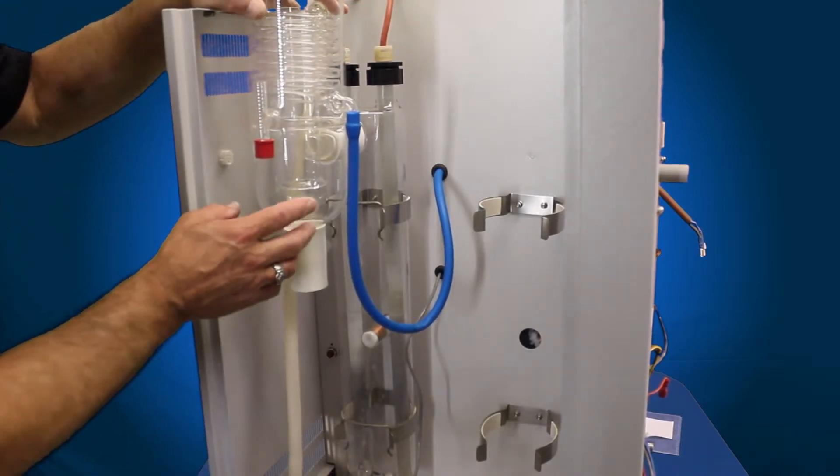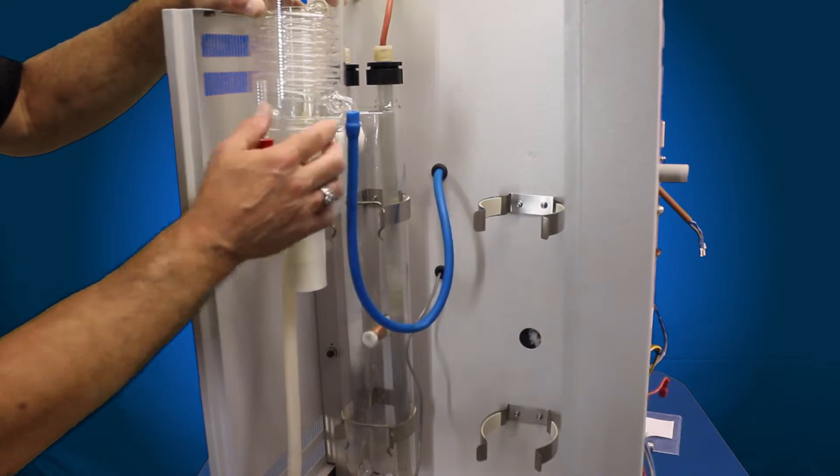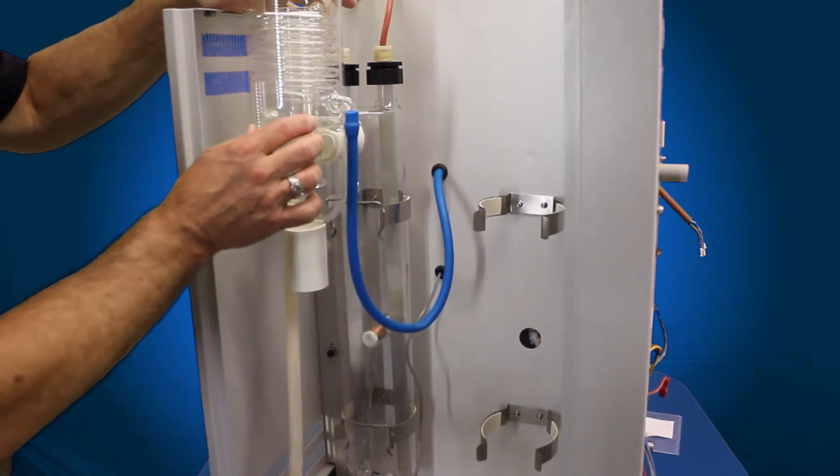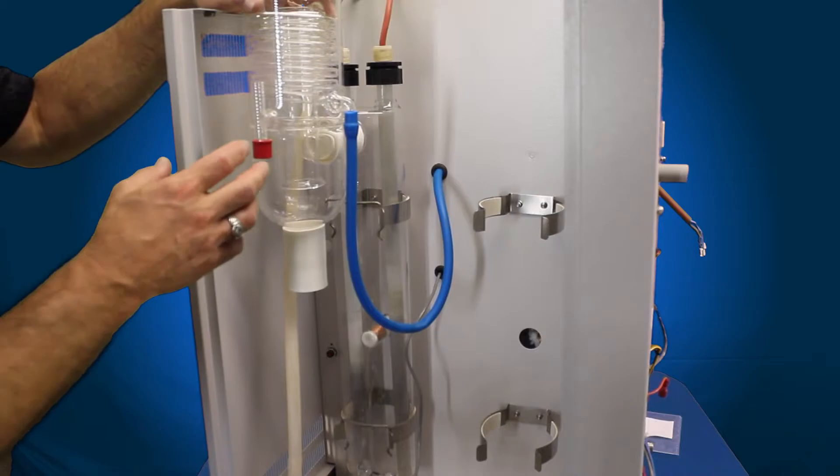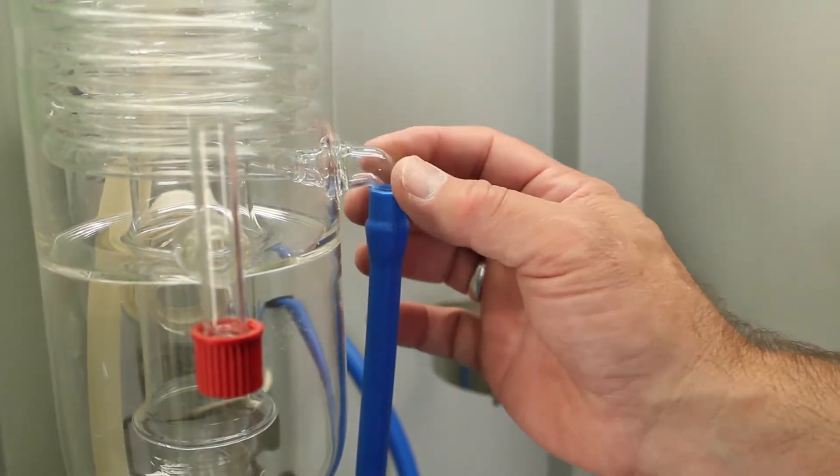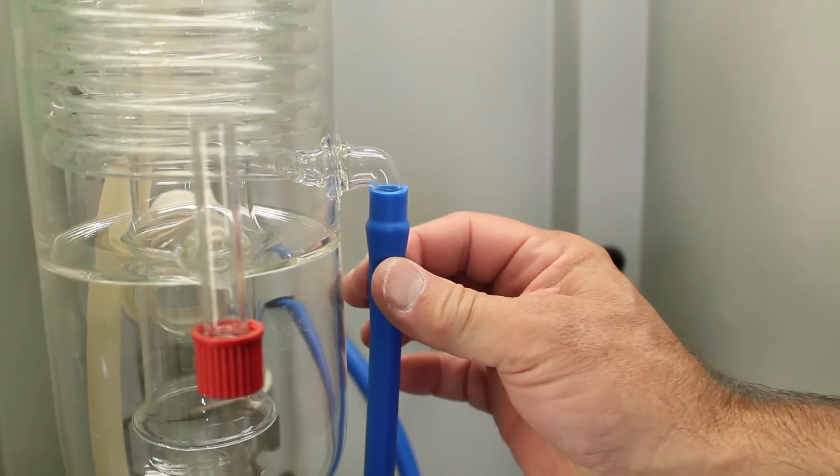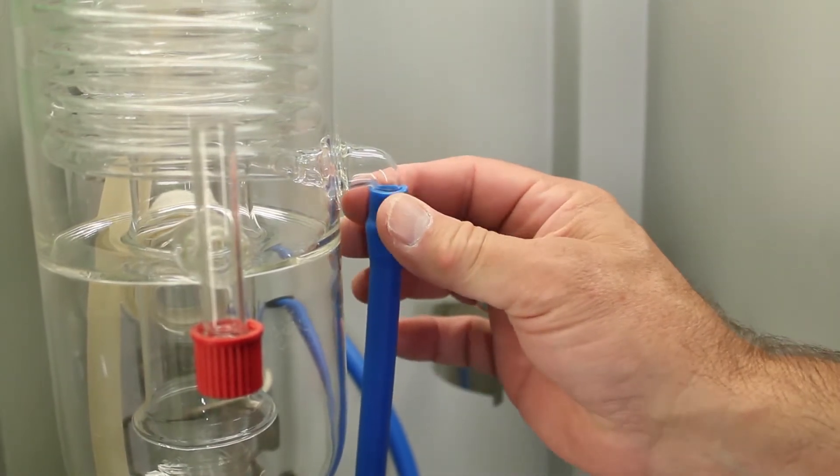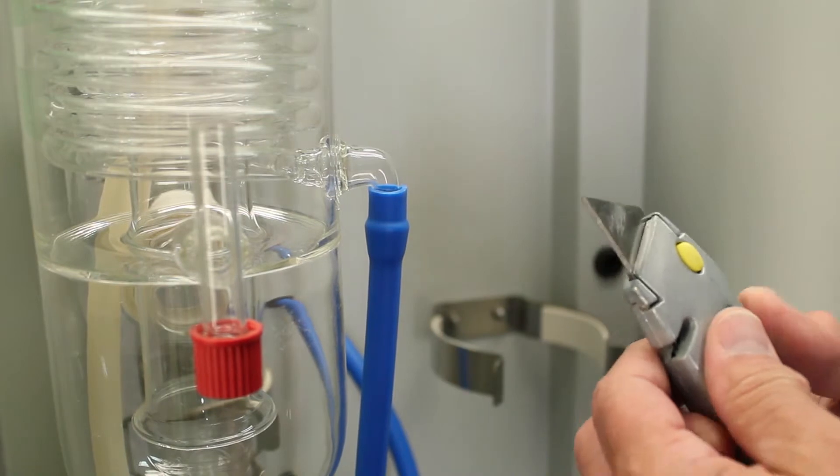And now we're going to go ahead and remove the tubing, your inlet tubing and your outlet tubing to the condenser, and then we'll slide the condenser away from the boiler. Now, tubing is typically adhered to the glass components because it's a silicone tube. The heat will adhere it, so you won't be able to get the tube off once it's on there for any length of time.